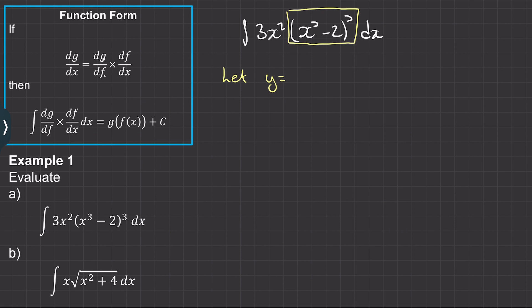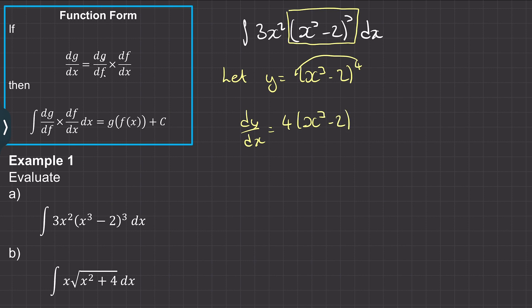We need to get the 3 when we differentiate, so we say let y equal (x³ − 2)⁴, because when we differentiate we take away 1 from the power and get the 3. Differentiating gives dy/dx: the 4 comes down to give 4(x³ − 2)³. Then we differentiate the inner function x³ − 2, which gives 3x², and multiply by it, so dy/dx = 4(x³ − 2)³ · 3x².